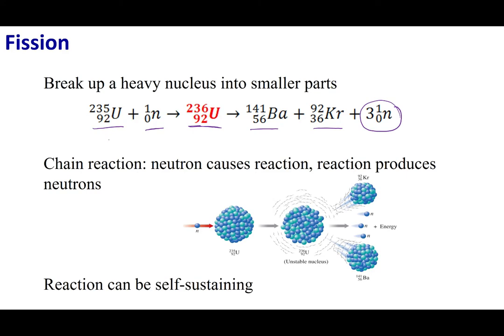Uranium-235 is more stable than uranium-236 — you can find uranium-235 in nature. To get this reaction started, we introduce neutrons to bombard the nucleus and make it more unstable, allowing the nuclear reaction to proceed. One of the products formed are neutrons, which can go and find another uranium-235 and kick off another reaction — making this reaction self-sustaining: once you kick it off, you start a chain reaction.